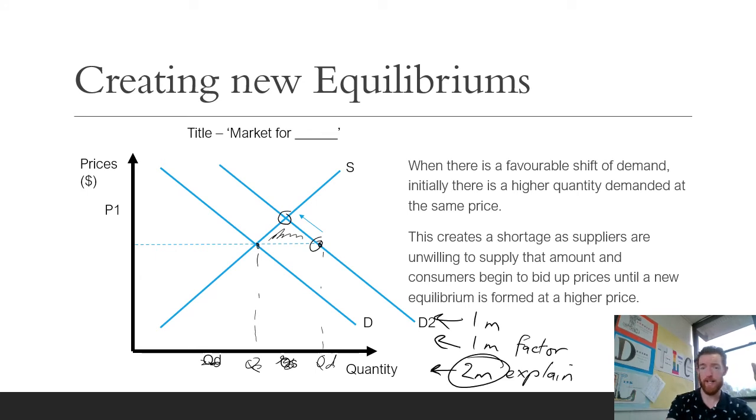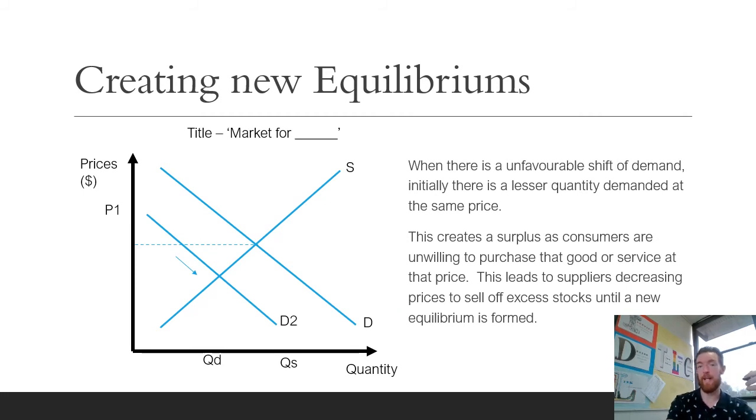When there is an unfavorable shift in demand, initially there's less quantity demanded at the same price. This creates a surplus as consumers are unwilling to purchase that good or service at that price. For example, if there's a news article saying that if you eat enough donuts you'll get diabetes, that could cause an unfavorable shift in demand. Suddenly there is way more being supplied than is being demanded. This leads businesses or suppliers to start decreasing prices to sell off excess stock and they do that until a new equilibrium point is formed at a slightly lower price and less quantity.